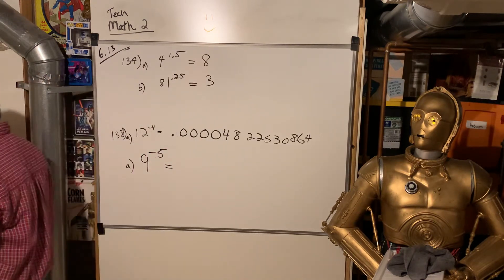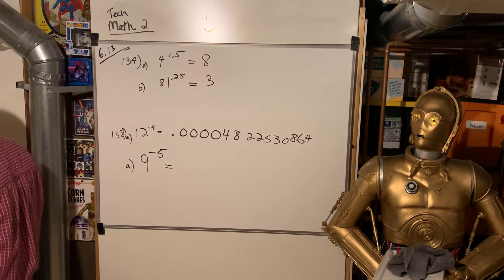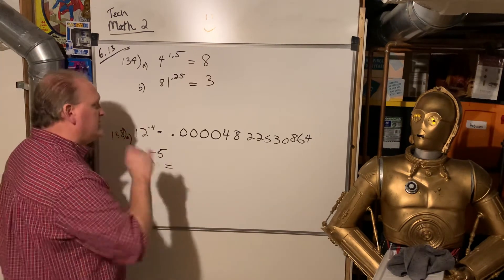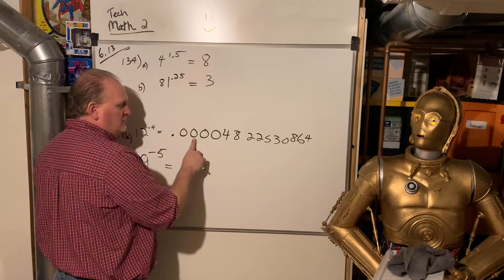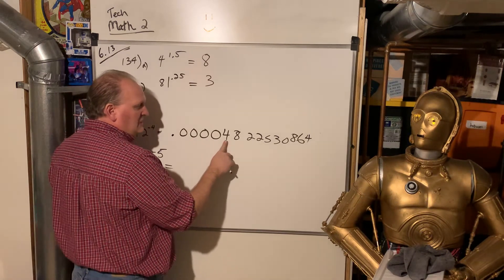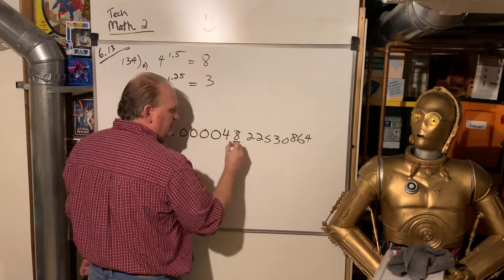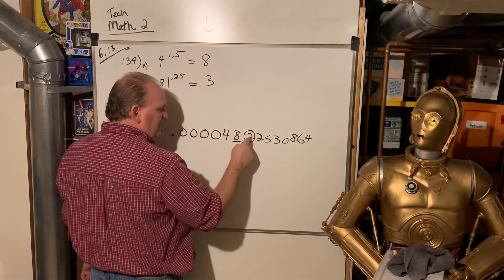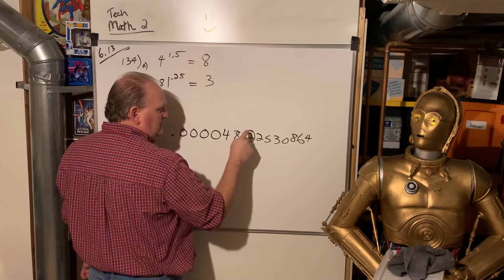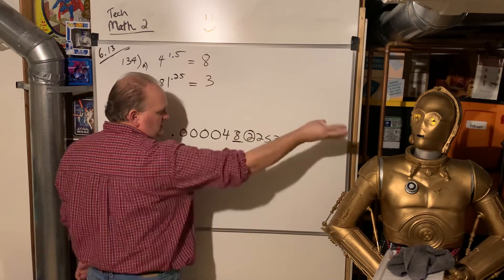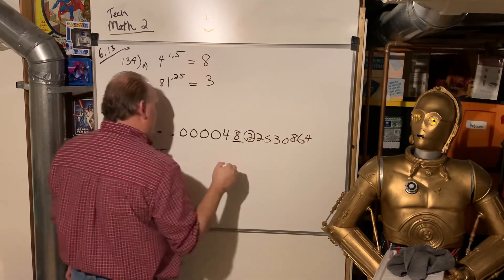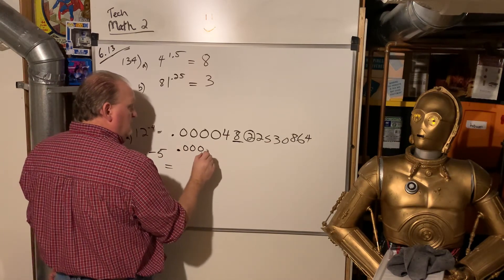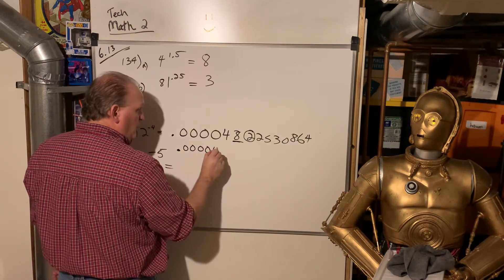And so remember from TechMath 1, we talked about significant digits. And remember, zeros didn't really count as significant unless they were between two significant digits. And so that's why the calculator defaults to scientific notation. Now, they only wanted this one to millions, millions. So tenths, hundredths, thousandths, ten-thousandths, hundred-thousandths, millionths place. So we look at the one to the right of it. If that's 5, 6, 7, 8, or 9, we bump that up to a 9. If it's 4, 3, 2, 1, 0, we just truncate, drop it off, and leave that at 8. So our answer for this one is 0.000048.